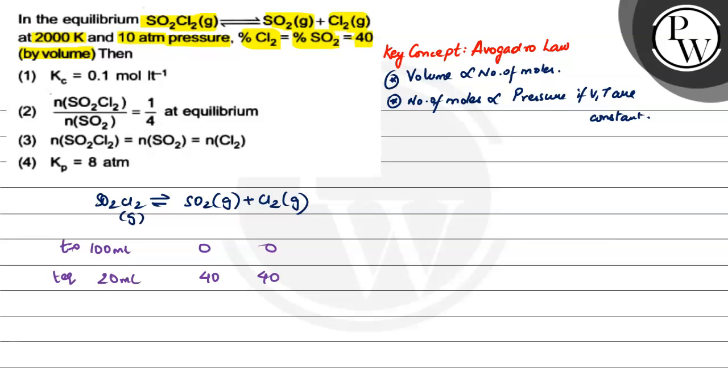Now what we will do is, because we know that volume is directly proportional to number of moles and number of moles is directly proportional to pressure, we can say the total pressure, which was 10 atm, because it was at equilibrium, the division of that pressure will be in the same ratio. So here we have basically 2 atm, here we have 4 atm, and here we have 4 atm.